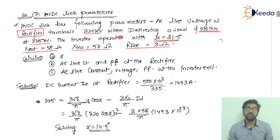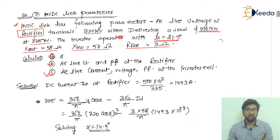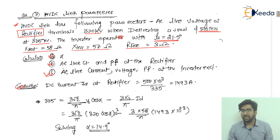We have to calculate: (1) the value of alpha, AC line current, and power factor at the rectifier, and (2) the AC line current, voltage, and power factor at the inverter. Now let's talk about the solutions.